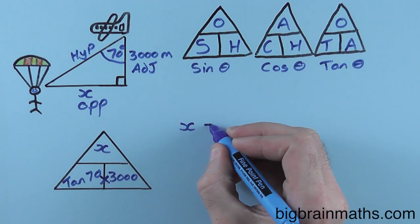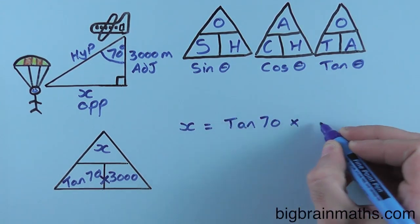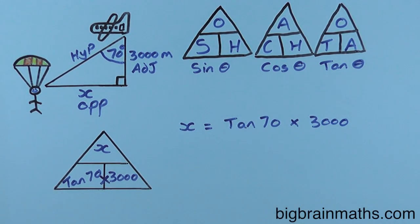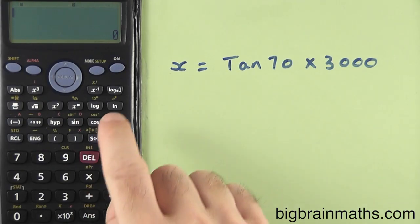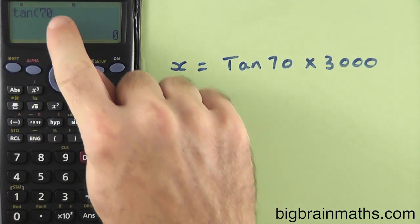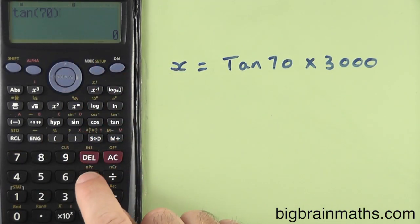So, X equals tan 70 multiplied by 3000. To enter this into our calculator, we type it in exactly how we've wrote it in our workings. We press tan 70, we need to close that bracket, multiplied by 3000.